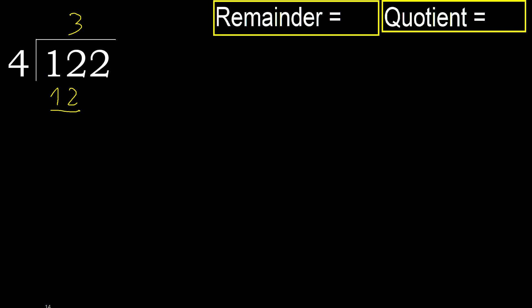Subtract: 12 minus 12 equals 0. Next, eliminate 0 on this side, bring down 2. 2 is less.